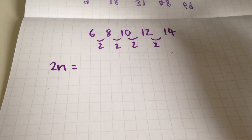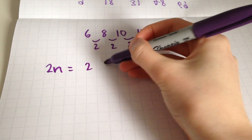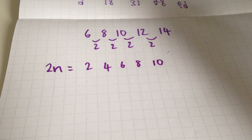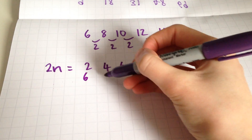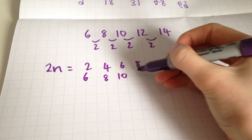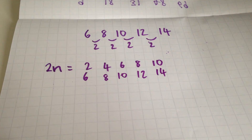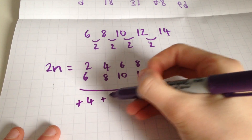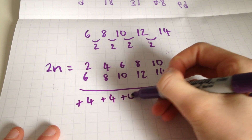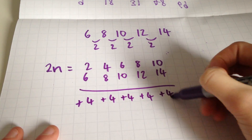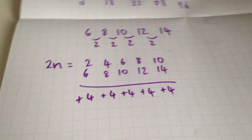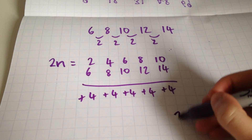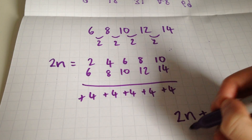Now the 2n sequence is just the 2 times table which is 2, 4, 6, 8, 10. And then we need to find out the difference between the 2n sequence and the original sequence. I'm writing it underneath just to make things a bit easier. And then we plus 4, plus 4, plus 4, plus 4 and plus 4. Then basically we just put it all together and the nth term of this sequence is 2n plus 4.